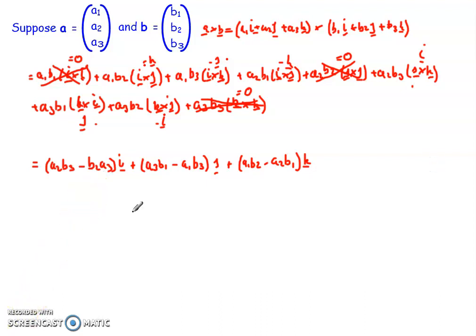Now one thing you may find useful to do is this middle part here, of the j component, take out a negative 1 as a factor, and you'll see what in just a second. So I can write it as a2 b3 minus b2 a3 in the i direction minus a1 b3 take away a3 b1 in the j direction, plus a1 b2 minus a2 b1 in the k direction.